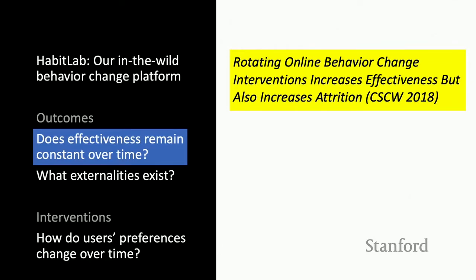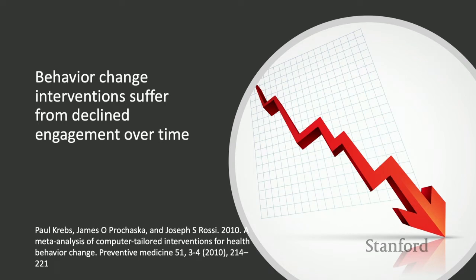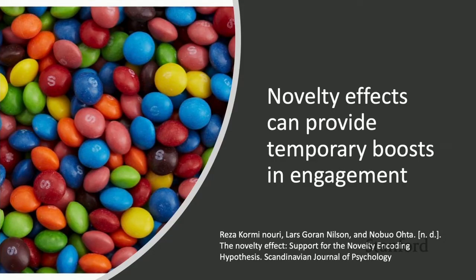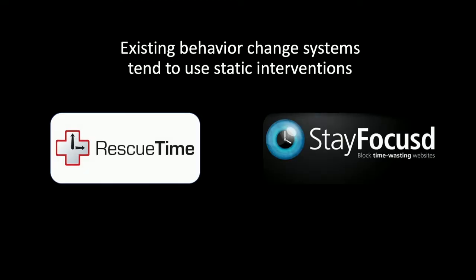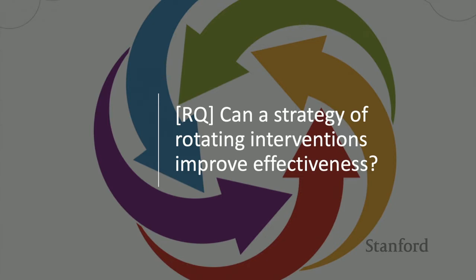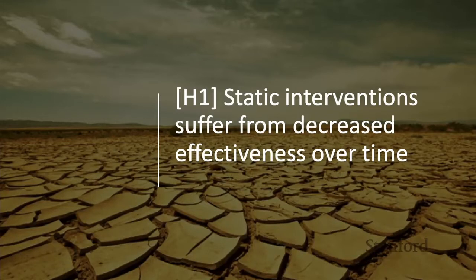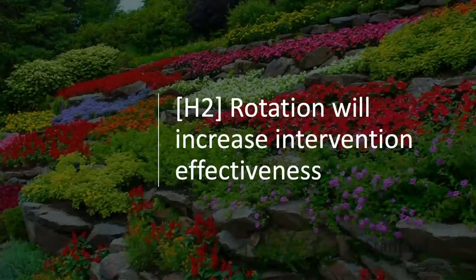That's basically HabitLab — how we built it and how we grew it. Now let's talk about the studies we ran on the HabitLab platform. The first is a paper presented at CSCW 2018, titled 'Rotating Online Behavior Change Interventions Increases Effectiveness but Also Increases Attrition.' Theory has shown that behavior change interventions suffer from declined engagement over time, and that novelty effects can provide a temporary boost in engagement. Existing behavior change systems tend to use static interventions, not making full use of this novelty effect. This leads to our research question: can rotating interventions help improve effectiveness?